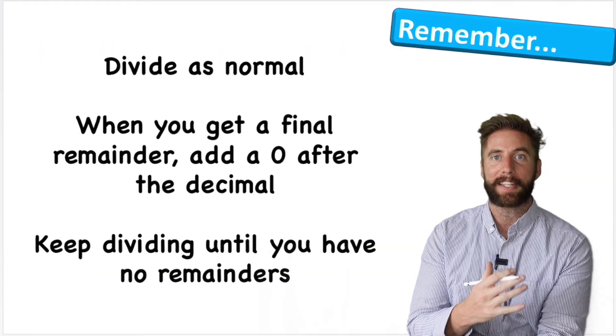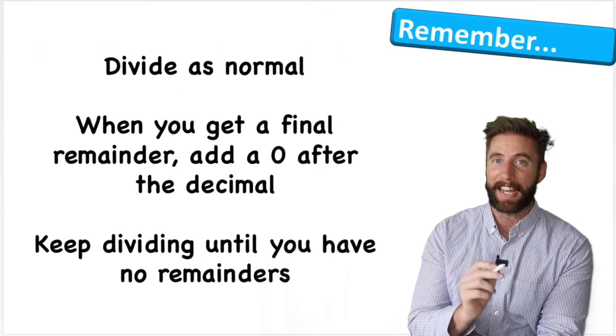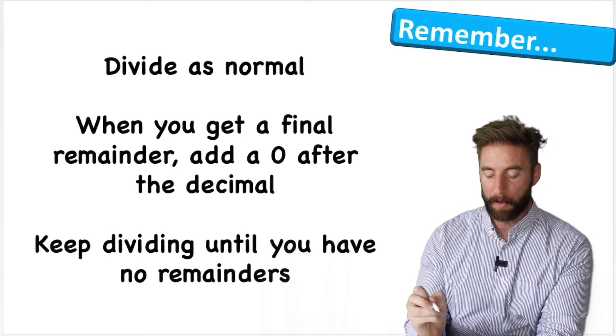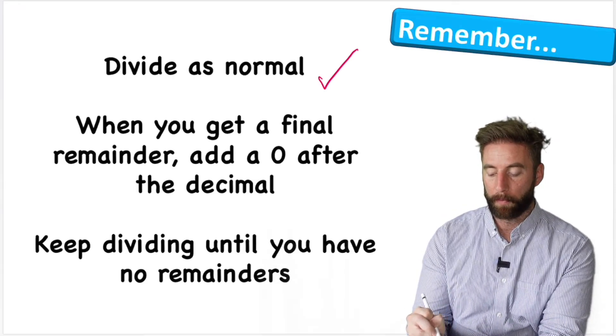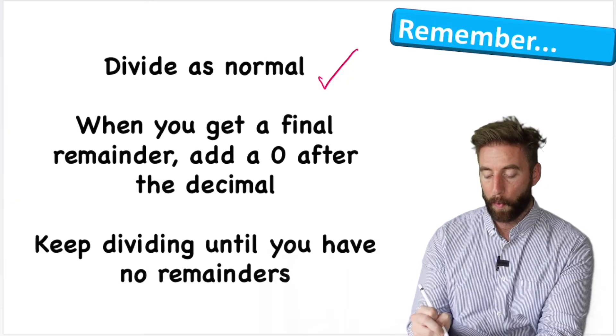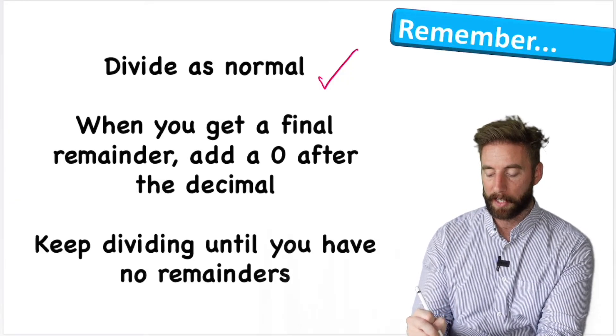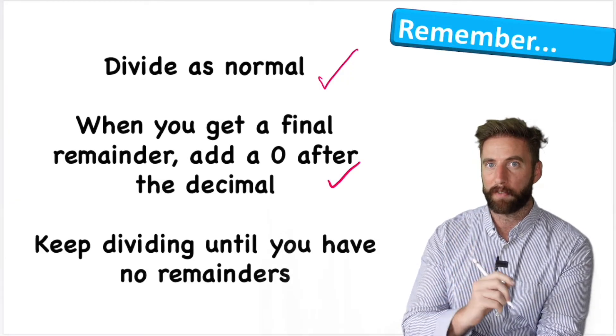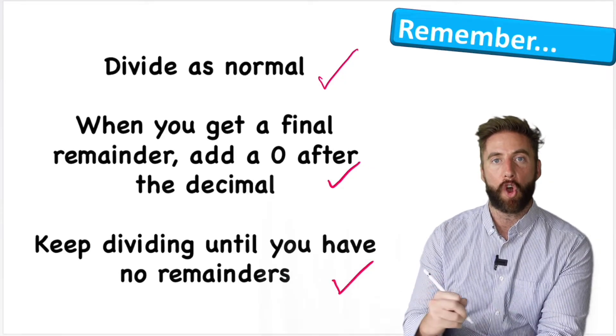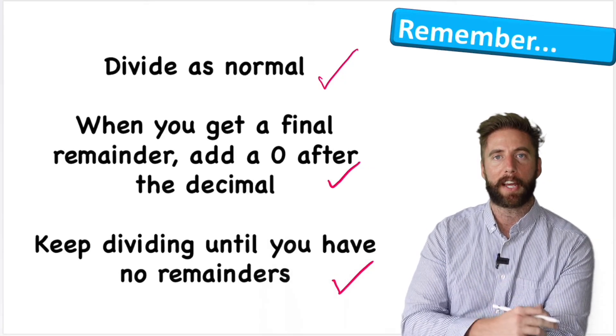Okay, there you go. That is everything you need to know about dividing and getting a decimal remainder. So what should we remember? First, divide as normal. And then when we get a final remainder, we can just add a zero after the decimal, remembering that that doesn't change the value. Keep dividing until we have no remainders. And there you go, you're going to have a decimal answer.